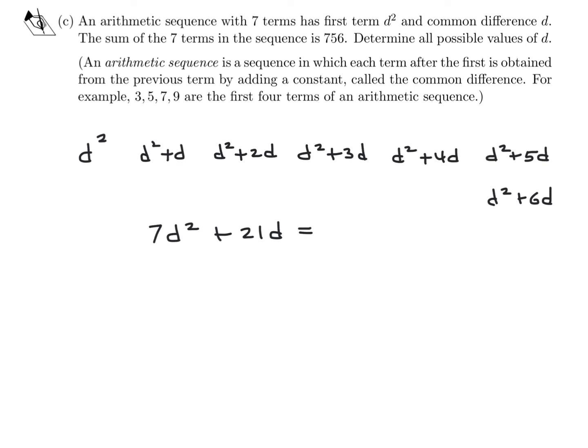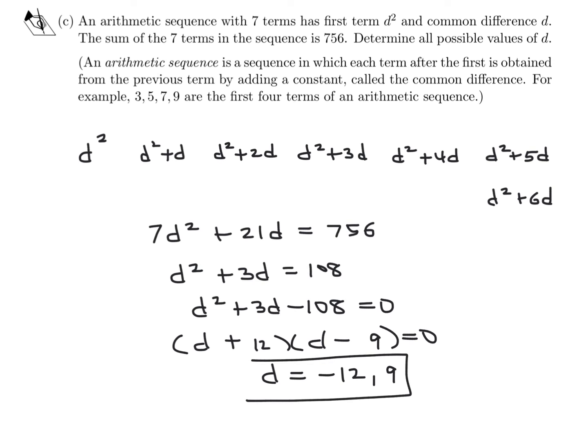If you add them all up, I believe we get 7d² + 21d, and they're saying that sum is 756. That's the algebra. Divide through by 7 and you get d² + 3d = 108. Put everything on one side: d² + 3d - 108 = 0. Let's see if this factors. You don't want to use the quadratic formula. This factors very nicely: 12 and 9 and plus and minus. Therefore, d is either -12 or 9, and those are the possible values of d.